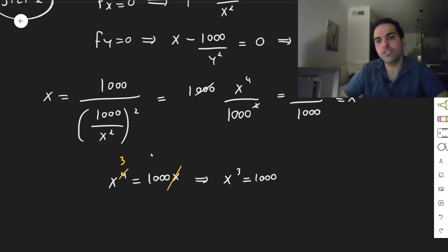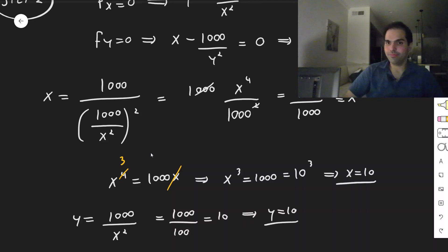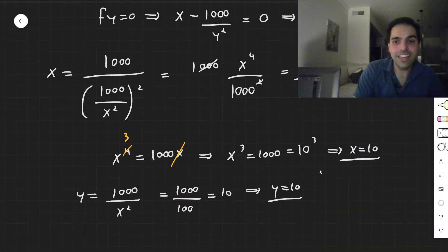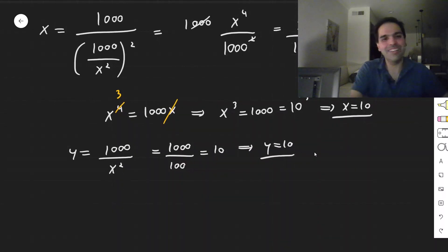But remember, a thousand is just 10 cubed. So essentially, what you get is x equals 10. So we get x equals 10, but then what is y? Well, remember, y is a thousand over x squared. So now it becomes a thousand over a hundred, and that's 10. And so y equals 10 as well.